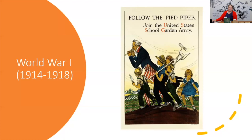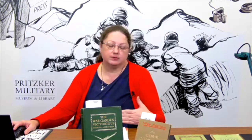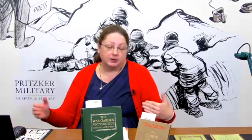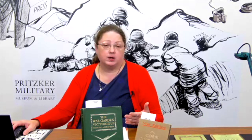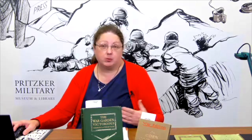Those convoys were attacked frequently on the Atlantic by submarines. Submarines were first actively used during World War I and saw much more use in World War II. The supply lines between the United States and Europe were long — you had to cross the Atlantic Ocean where you didn't necessarily know where the enemy was.